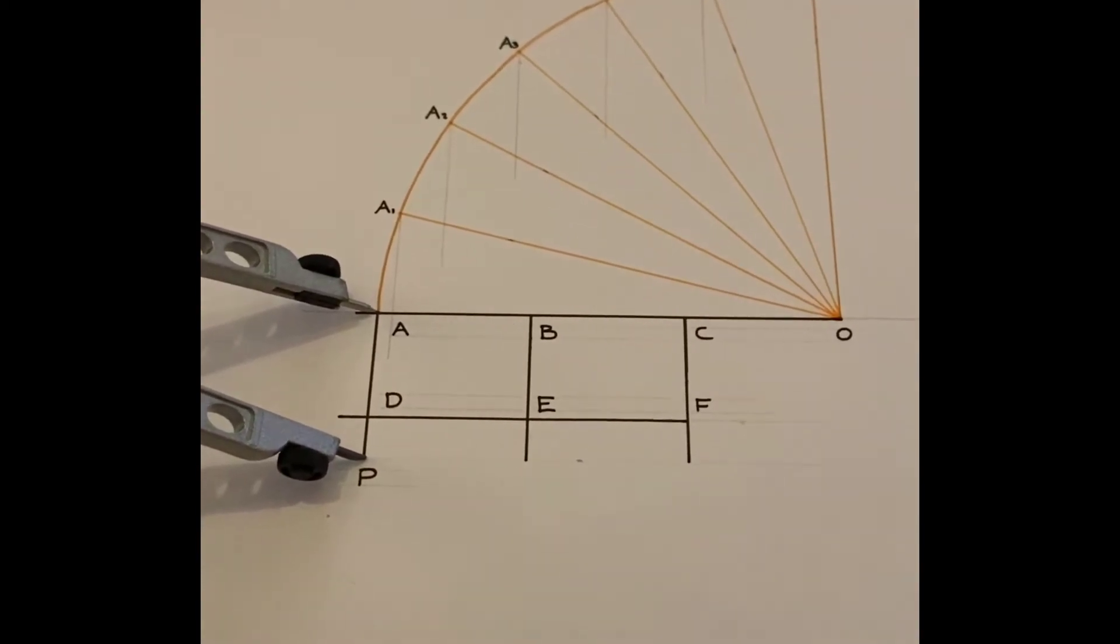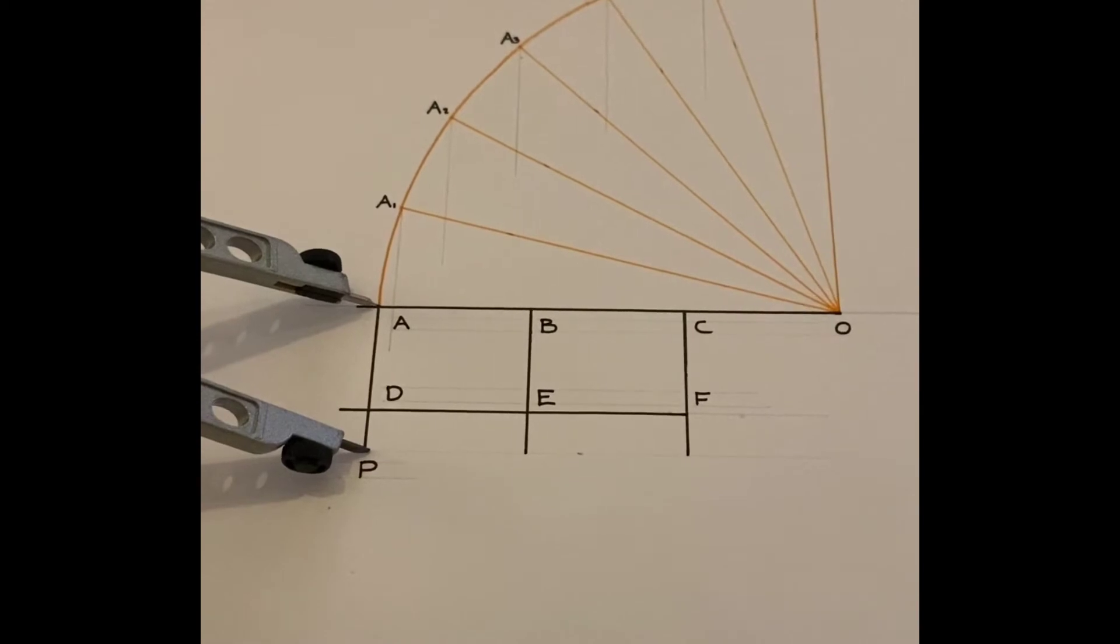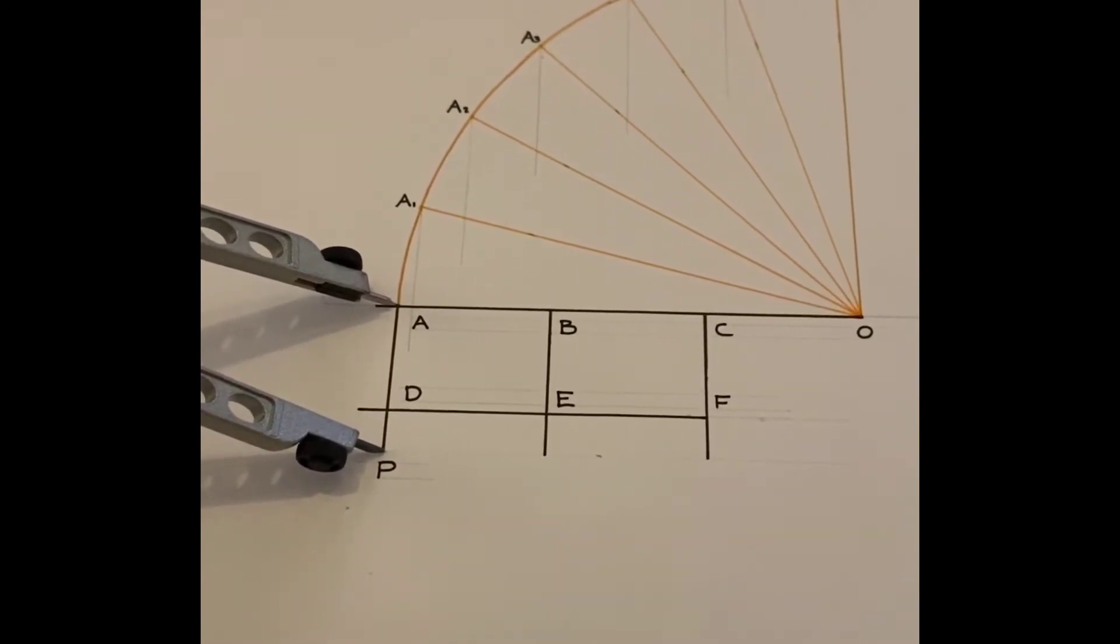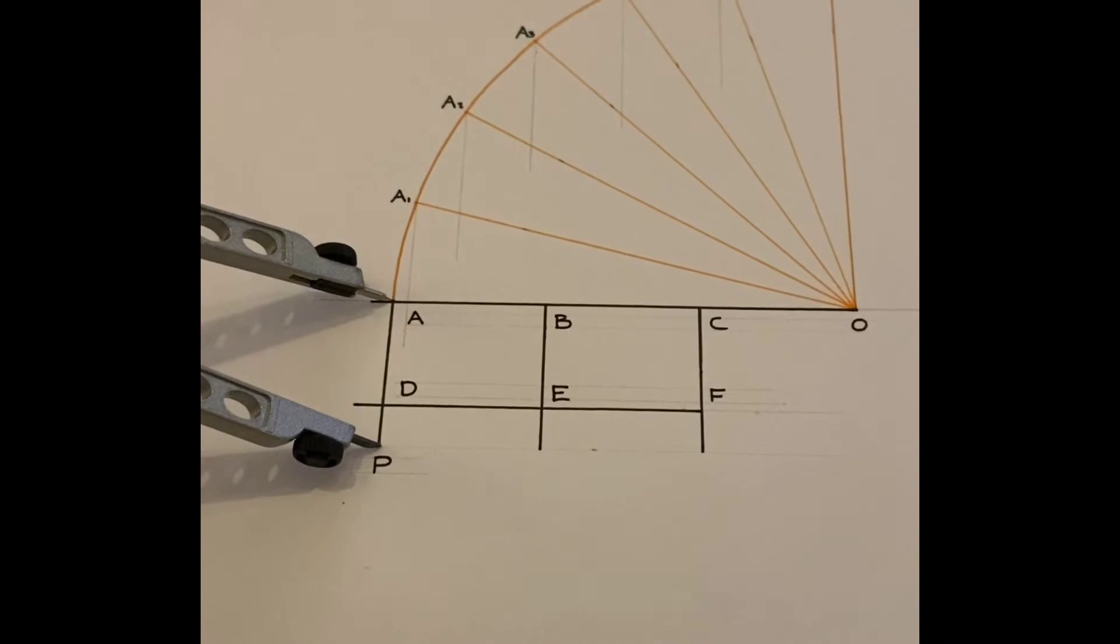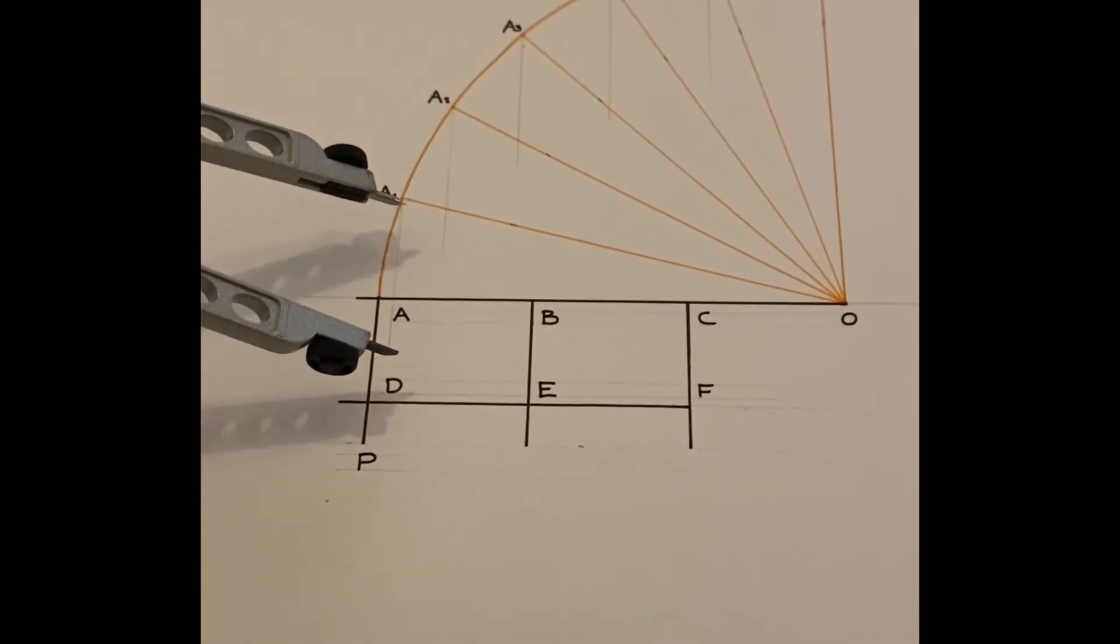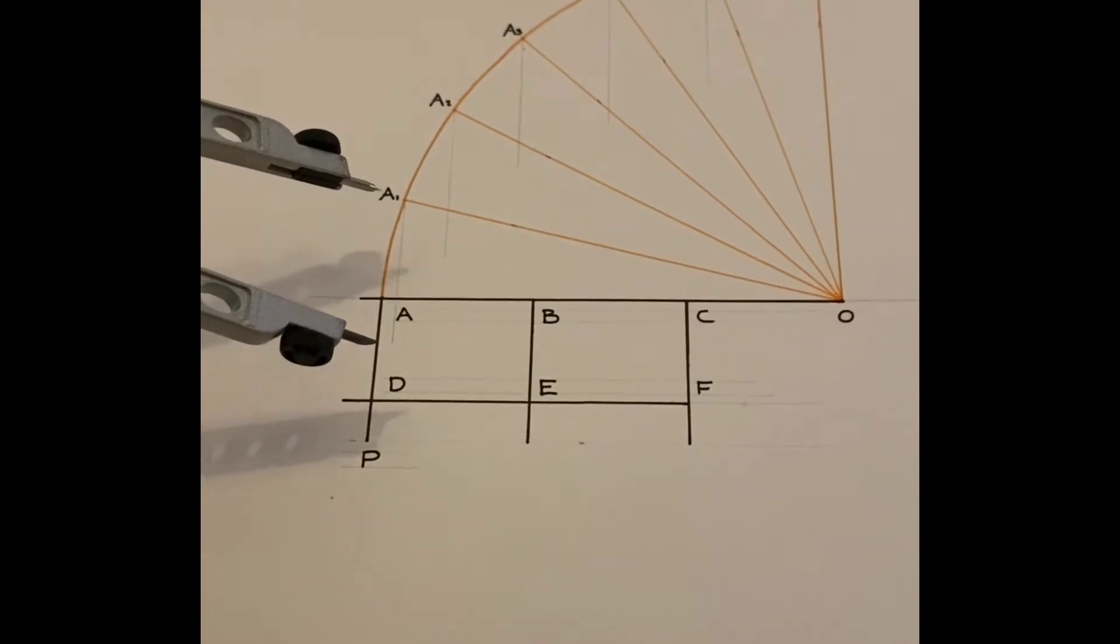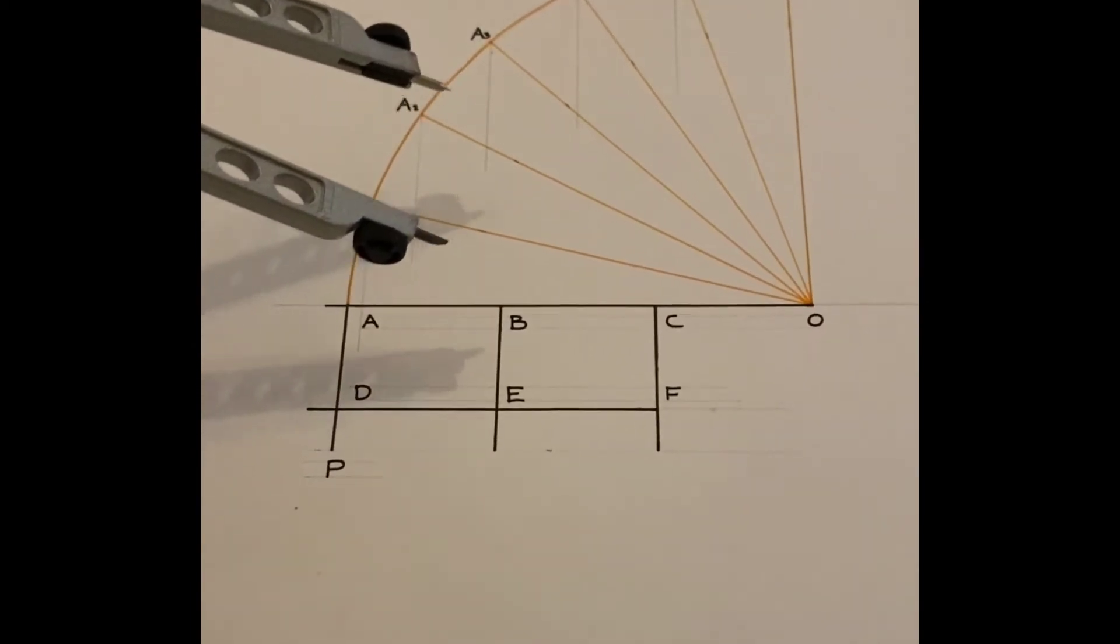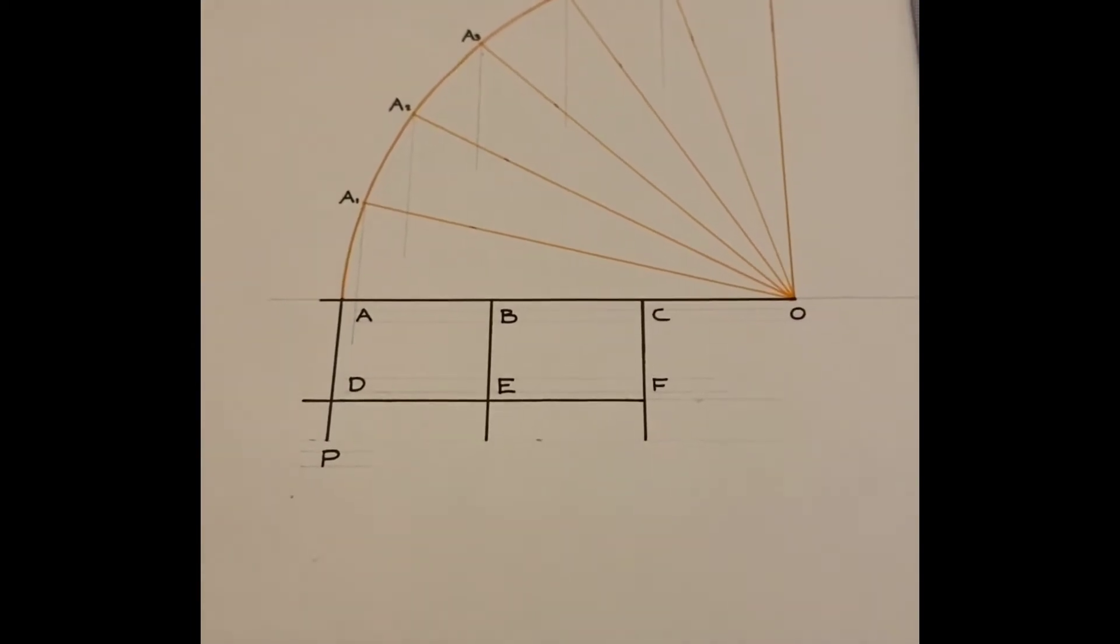So as you can see I've dropped vertical lines from all of the A points. Now I take the distance from A to P on my compass and I take that distance and I put the point of the compass on A1 and then mark the distance down and that will give me P1 and I do that so on and so forth for the rest of the points.